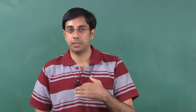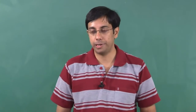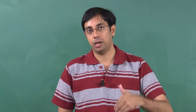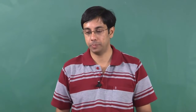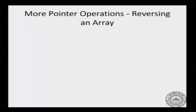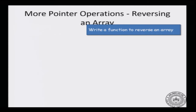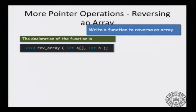In this lecture, we will see some more pointer arithmetic operators, and we will introduce those by talking about them through a problem. The problem is that of reversing an array. We have to write a function to reverse an array, and the declaration of the function is: void reverse_array(int *a, int n).